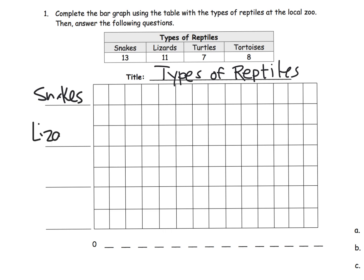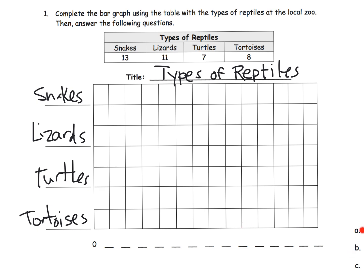So we've got snakes, lizards, turtles, and tortoises. And then the other thing we need is we know we need to have our numbers going down here.